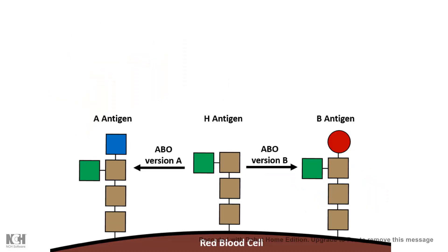Let's talk about a very common thing. The red blood cell has A antigen or B antigen on top of its surface. But the H antigen, which is the base of it, can be either modified into different residues, and based on that, it could be A antigen or it could be B antigen.